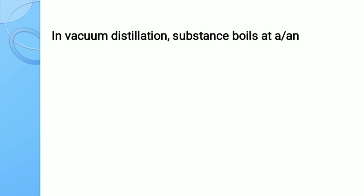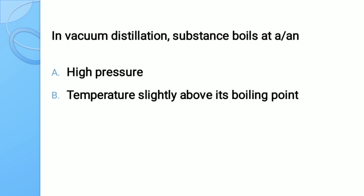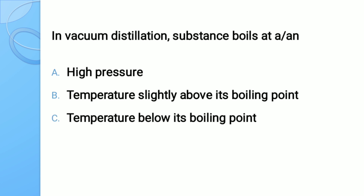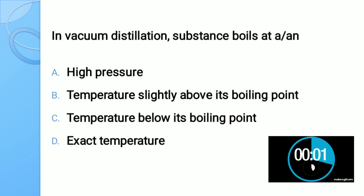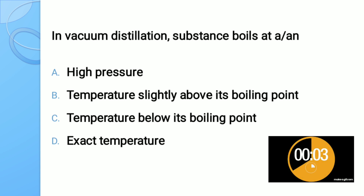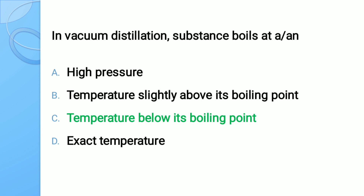Question number seven: In vacuum distillation, a substance boils at — options: A) high pressure, B) temperature slightly above its boiling point, C) temperature below its boiling point, D) exact temperature. The correct answer is temperature below its boiling point.